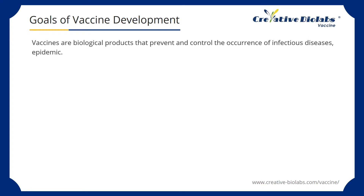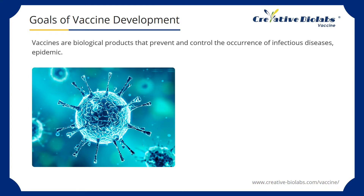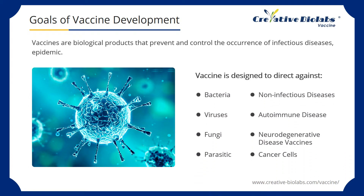Vaccines are biological products that prevent and control the occurrence of infectious diseases, and are used to increase the body's ability to combat disease organisms. Vaccines are very effective and they're the best protection against many serious diseases. Most people who get vaccinated will have immunity against the disease. Most vaccines are designed to help the body fight off a specific type of bacterium, protozoan, or virus. Vaccines and vaccine candidates have been directed at bacteria, viruses, fungi, parasitic, and non-infectious diseases, such as autoimmune disease and neurodegenerative disease vaccines. In addition, some vaccines have been developed to stop the growth of cancer cells, and to protect military troops from biological warfare.